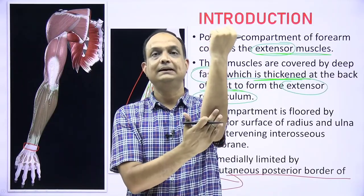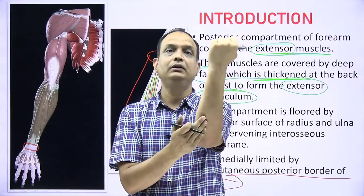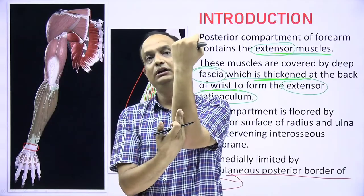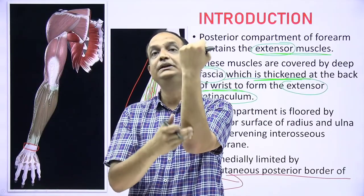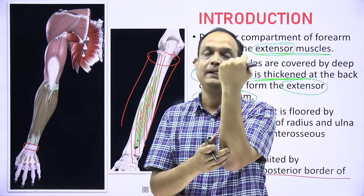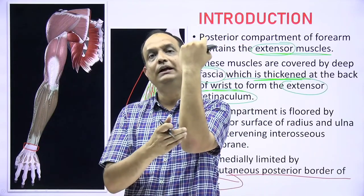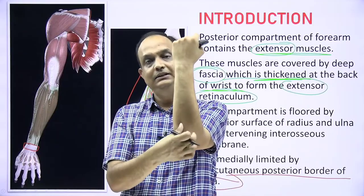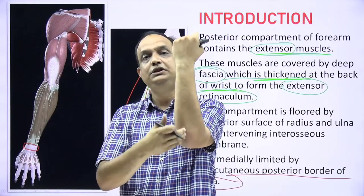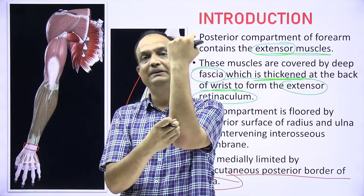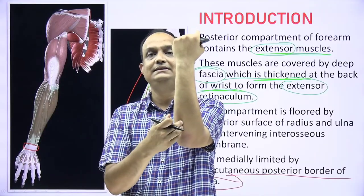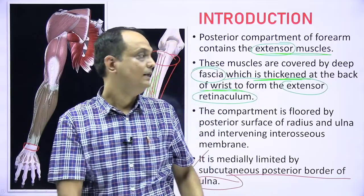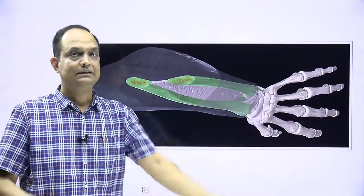All the extensor muscles lie on the lateral aspect of the medial border of the subcutaneous ulna. This subcutaneous border of the ulna is the demarcation and marks the medial extension of the posterior compartment. Whatever muscles you read in the posterior compartment lie just lateral to this subcutaneous posterior border of the ulna.